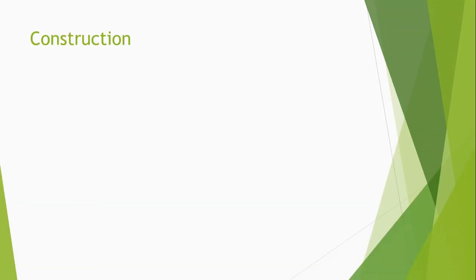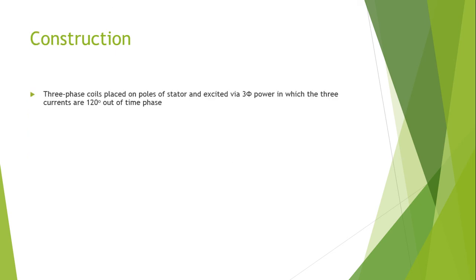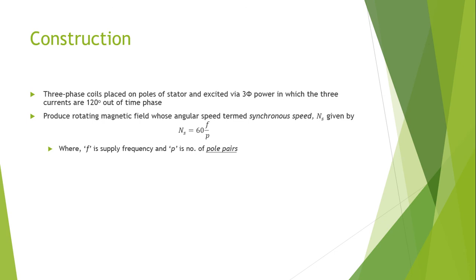Induction generators are available in different sizes and capacities greater than several megawatts. Three-phase coils are placed on the poles of the stator and excited via three-phase power, in which the three currents are 120 degrees out of phase with each other. This produces a rotating magnetic field whose angular speed — the synchronous speed — is given by the formula: ns = 60f / p, where f is the supply frequency.